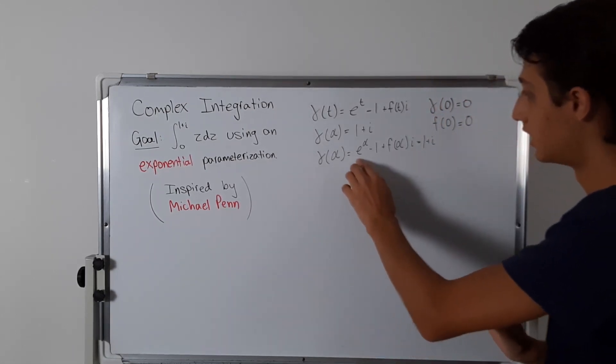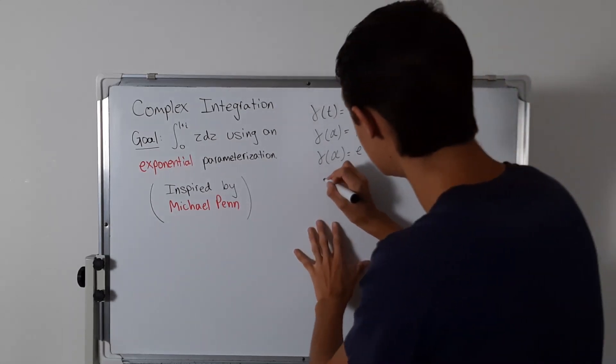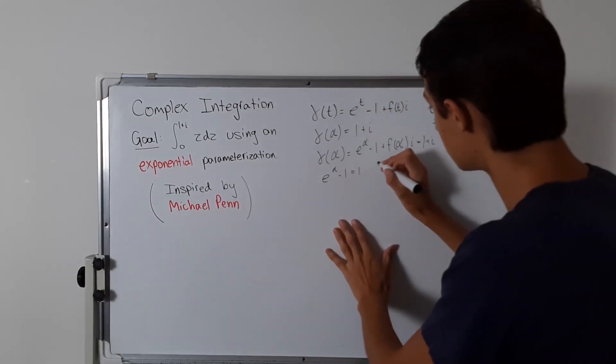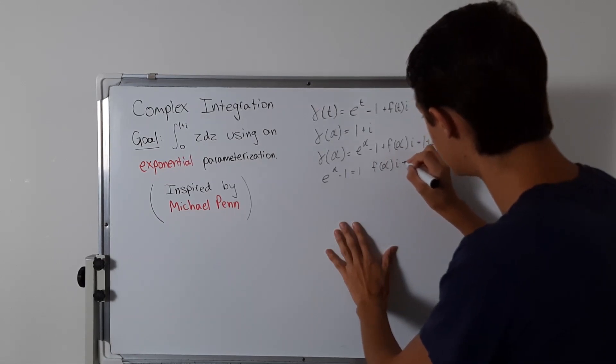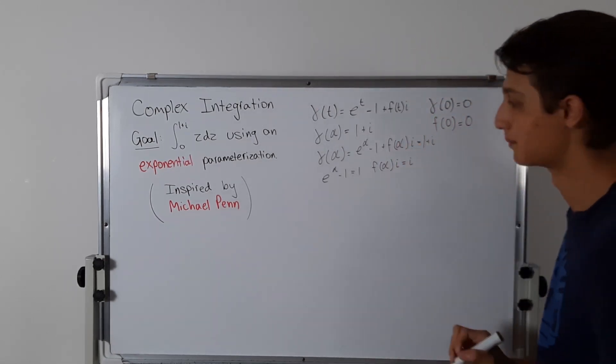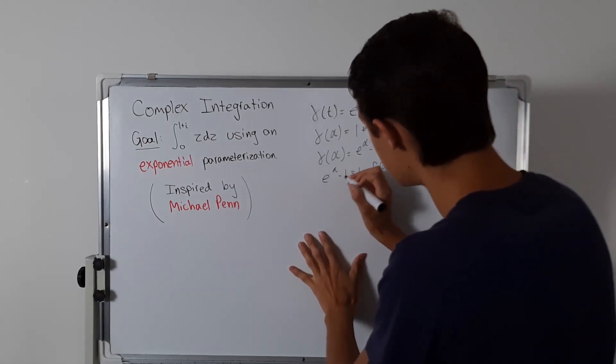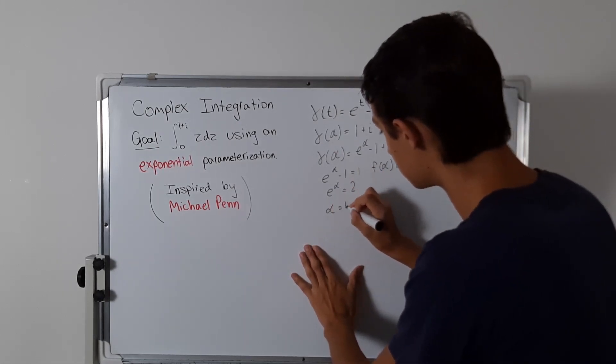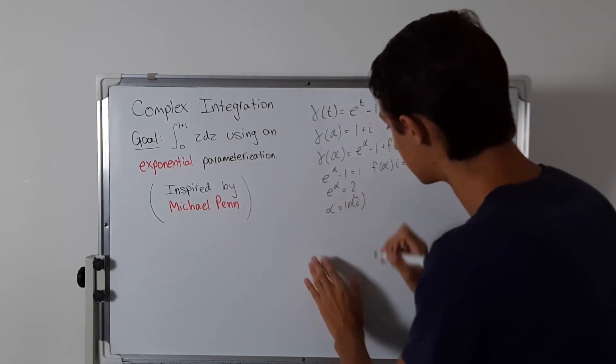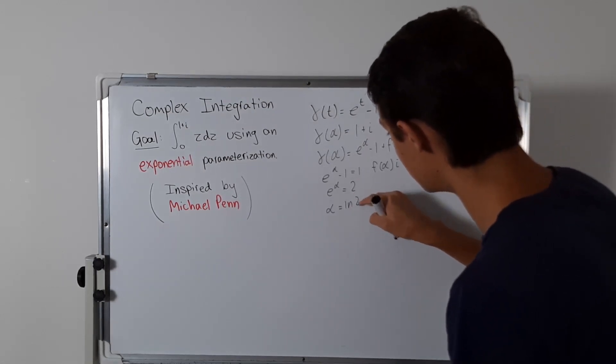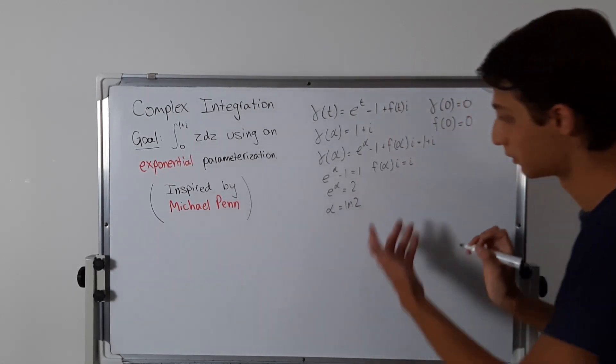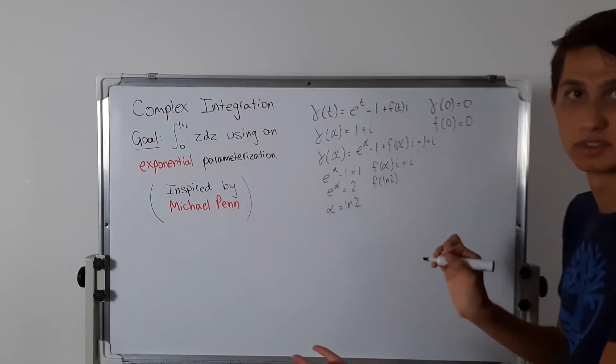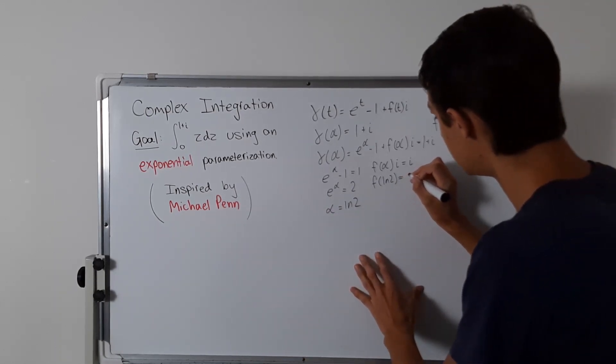We can compare the parts here. e to the alpha minus 1 is equal to 1, that's the real part. And f of alpha times i equals i, just 1i. So we have that e to the alpha equals 2. We can add one to both sides, and then alpha equals the natural log of 2. So f of ln 2 equals 1.